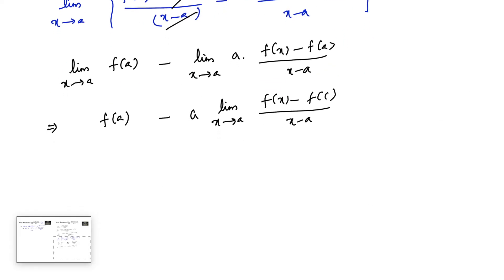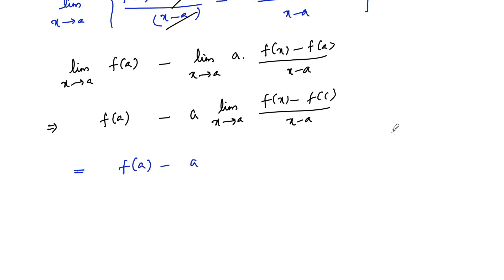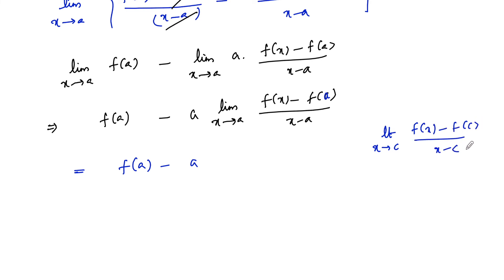Which implies this is equal to f(a) minus a into — since we know that f is differentiable at x equals a — from the definition of differentiability, limit x tends to a of f(x) minus f(a) divided by x minus a equals f'(a). So we can write a into f'(a), giving the final answer as f(a) minus a·f'(a).